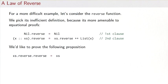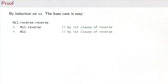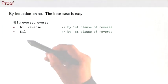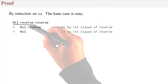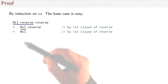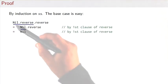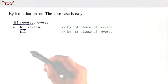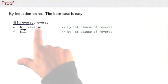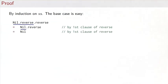We want to prove the proposition that xs.reverse.reverse is xs. To prove this, we use induction on the list xs. The base case is easy: nil.reverse.reverse equals nil.reverse by the first law of reverse, which says nil.reverse is nil, and then we invoke the first law again to show that equals nil.